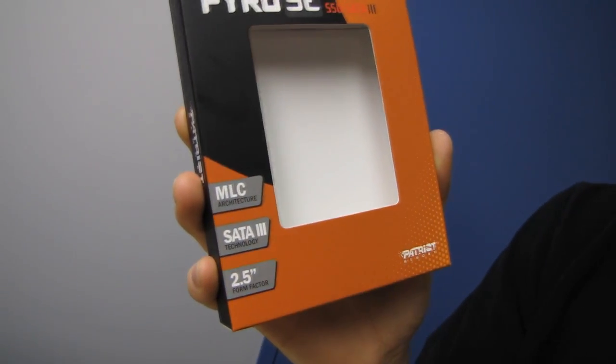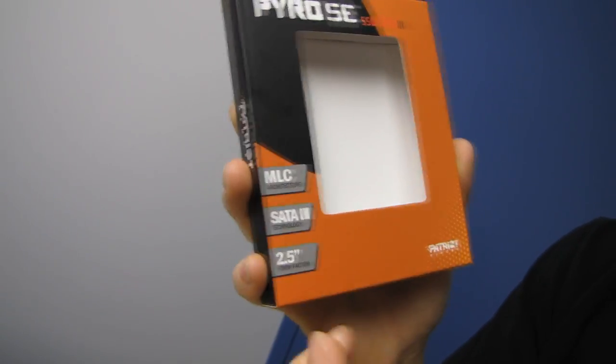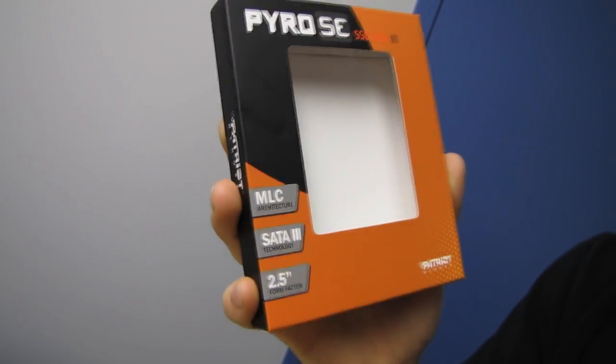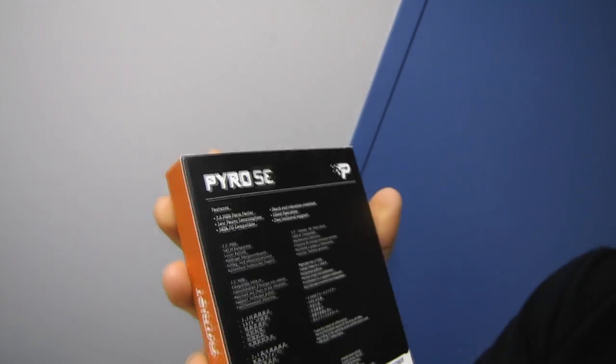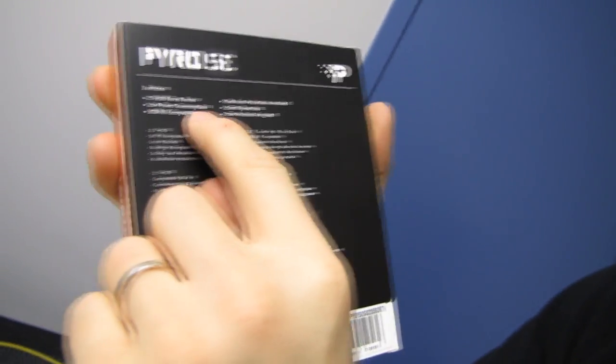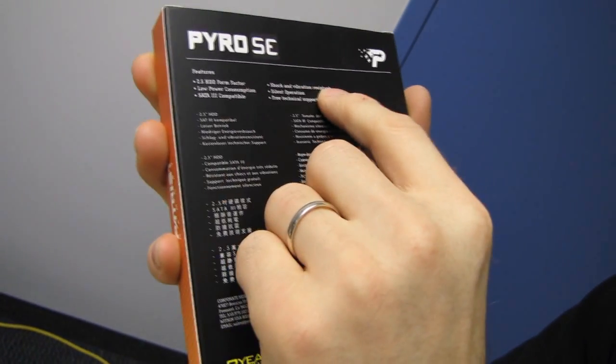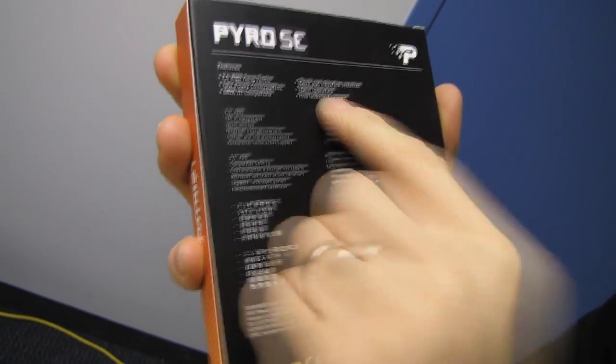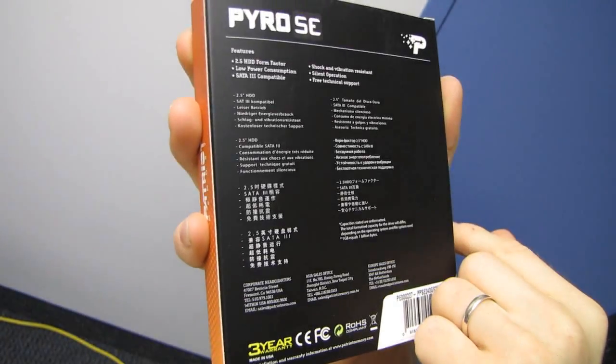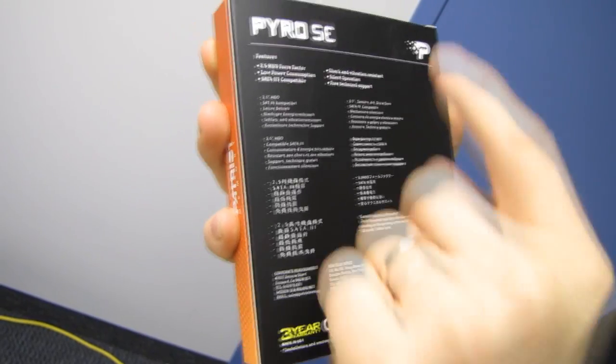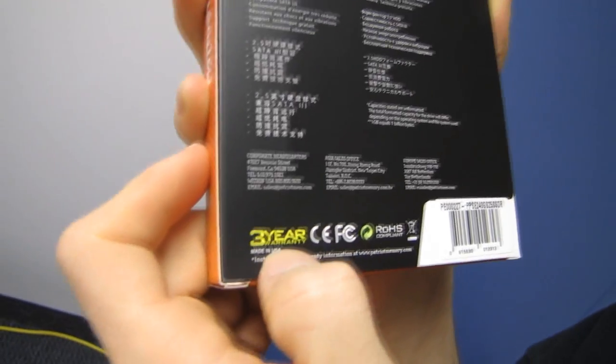MLC architecture means we're using MLC Flash. SATA 3 technology, two and a half inch form factor - but here's all the good stuff. Low power consumption, shock and vibration resistant which all SSDs are, silent operation which all SSDs are, and free technical support which not all SSDs have, so that's kind of cool. And you get a three-year warranty.